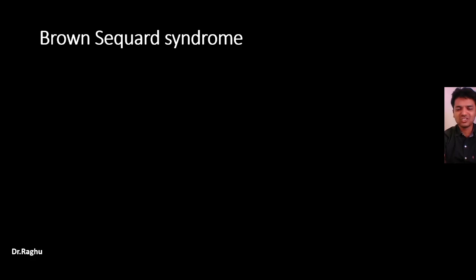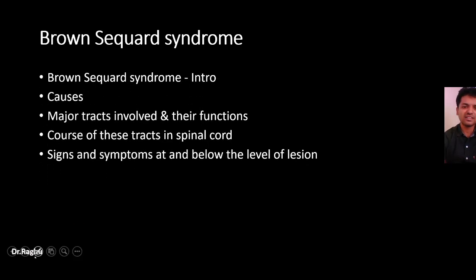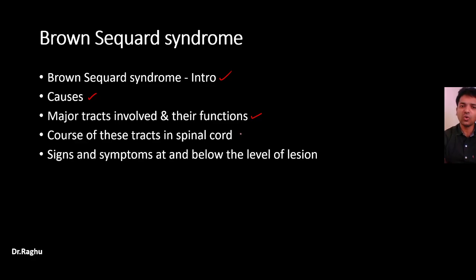Welcome back. Today I'm going to discuss Brown-Séquard syndrome. We'll cover the following objectives: a brief introduction, the causes, the major tracts and their functions, the course of these tracts in the spinal cord, and the symptoms which occur both at the level of the lesion as well as below the level of the lesion.